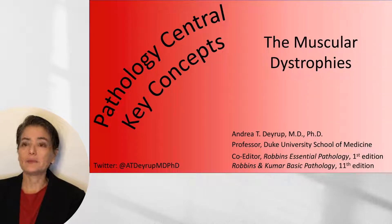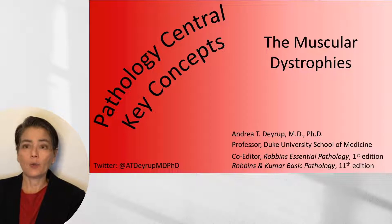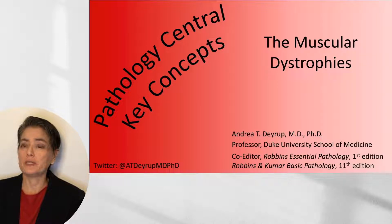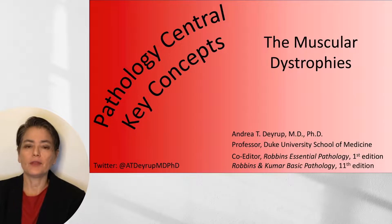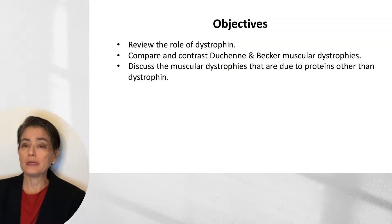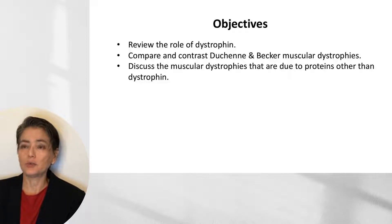Welcome to Pathology Central Key Concepts. The topic of this video is the muscular dystrophies. There are a wide range of muscular dystrophies, the most common of which are due to mutations in the gene that encodes the protein dystrophin — these are also referred to as the dystrophinopathies. I will begin by reviewing the role of dystrophin, then compare and contrast Duchenne and Becker muscular dystrophies, and then finish by discussing muscular dystrophies due to proteins other than dystrophin.